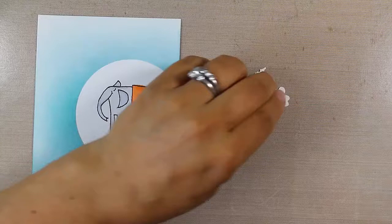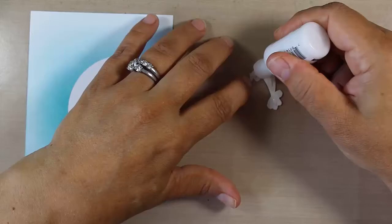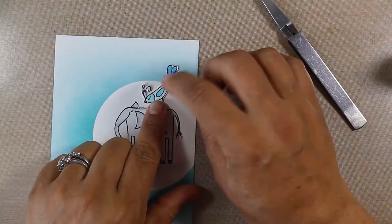We're just going to adhere that using some multi-medium here. This way if anything peeks out of the side, it's going to dry clear. I want this to just stay in place, don't really want it to move too much. Just using some reverse tweezers to help get the perfect placement.